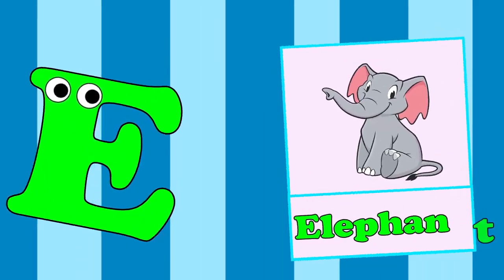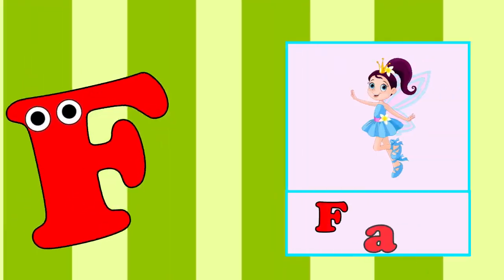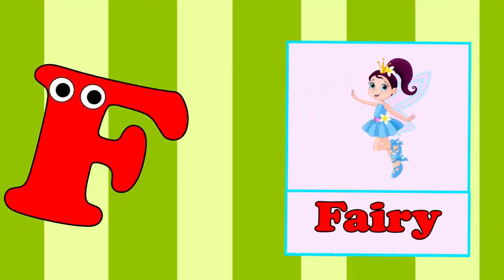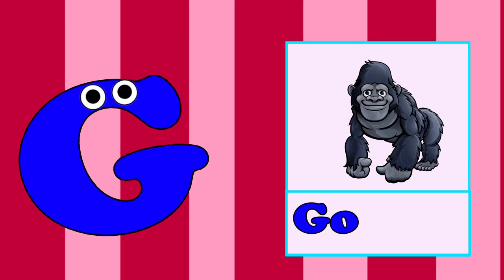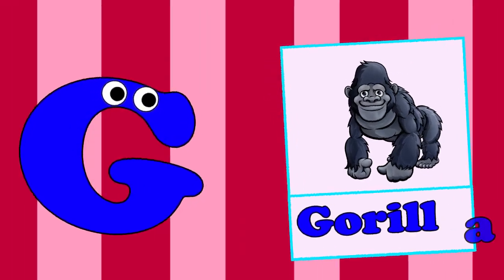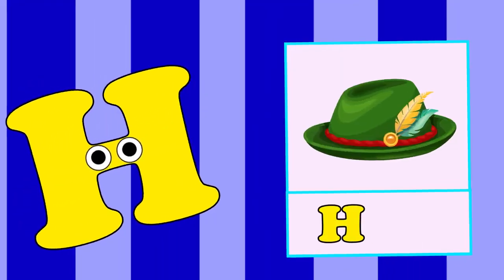E is for Elephant. Eh, Eh. Elephant. F is for Fairy. Fa, Fa. Fairy. G is for Gorilla. Ga, Ga. Gorilla.